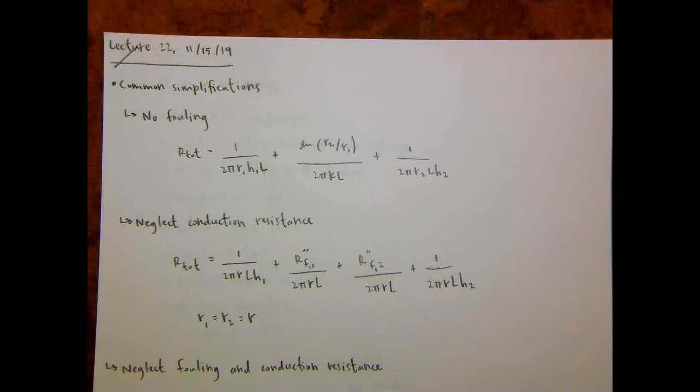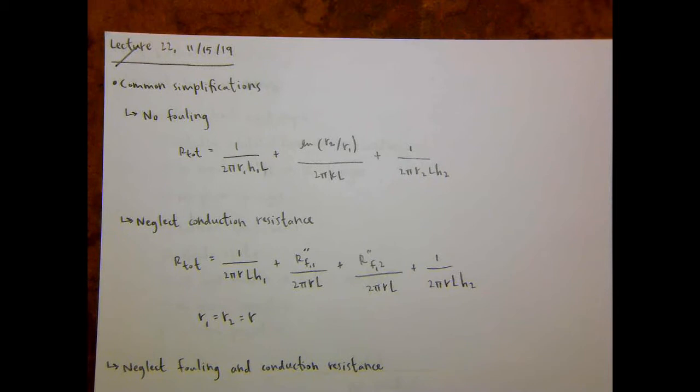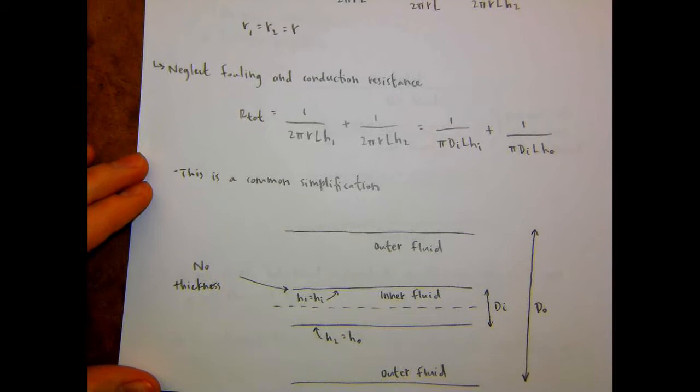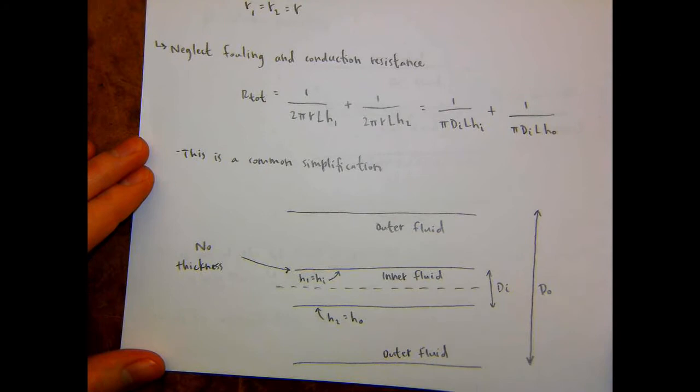Let's get started. We're talking about heat exchangers. On Friday we first went through some common simplifications for our total thermal resistance expression. We wrote down what the expressions would look like if there was no fouling, if we neglected conduction resistance through the inner tube wall, and then if we did both of those things, and wrote down the nomenclature that the book typically uses if you make those assumptions.